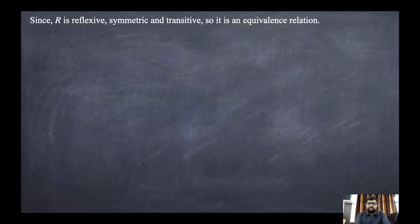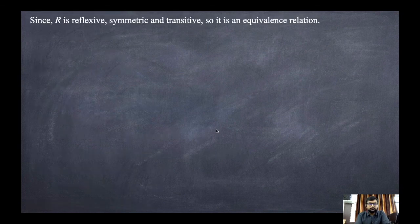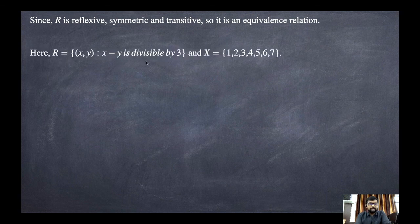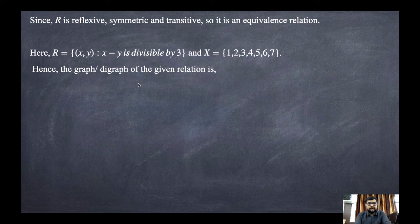Since R is reflexive, symmetric, and transitive, it is an equivalence relation. The question also asks to draw the graph of R. We rewrite the relation: R is the set of all (x, y) such that x minus y is divisible by 3, where x is from 1 to 7.